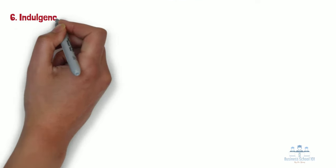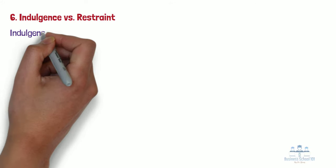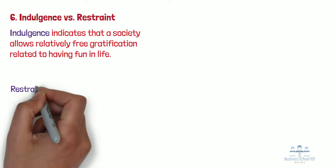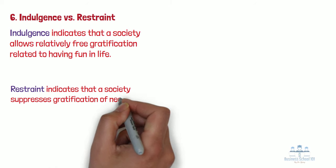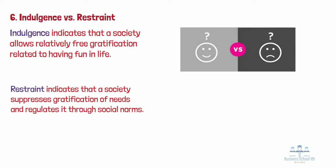Number 6: Indulgence vs. Restraint. This dimension was added in 2010 in order to capture more recent research conducted around themes of happiness. Indulgence indicates that a society allows relatively free gratification related to having fun in life. Conversely, restraint indicates that a society suppresses gratification of needs and regulates it through social norms. In other words, an indulgent society values the satisfaction of human needs and desires, while a restrained society sees value in curbing one's desires and withholding pleasures to align more with societal norms. In a country with a low indulgence rating, citizens are more likely to feel powerless, as if their experiences are not determined by their own actions, but rather by situations that happen to them.